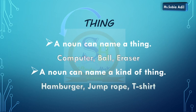A noun can name a thing like computer, ball, eraser — these are things. We use a specific name for those things. A noun can also name a kind of thing. Hum cheezoh ko bhi divide karte hain different categories mein, like hamburger, t-shirt, etc.